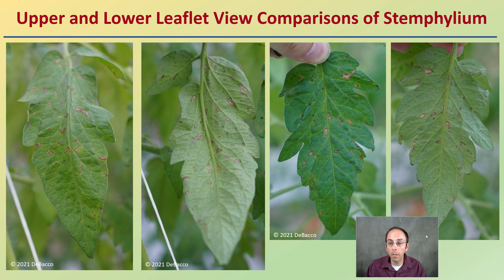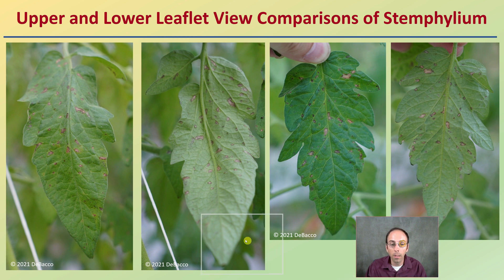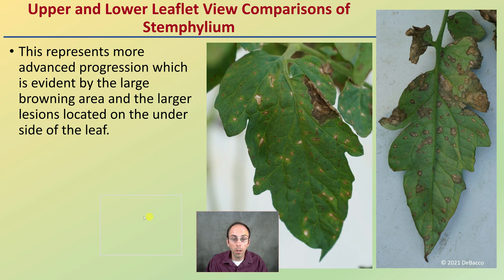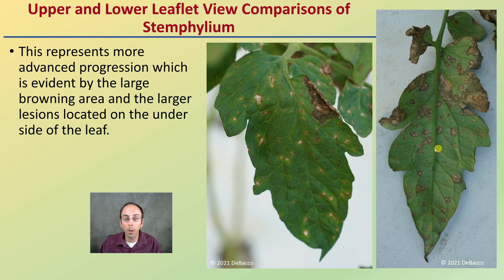Here's a zoomed-in view of what the different leaves look like — the upper portion and then the underside of that same leaf. You're not seeing a lot of yellow haloing here; instead, you're seeing brown coloration with tan centers. That tan coloration in the center with a darker brown region can be an indication of Stemophilium. Here's another look showing more advanced symptoms on both upper and lower leaf surfaces. The advanced progression is evident by this large browning area and larger lesions on the underside of the leaf — these are later stages compared to the earlier symptoms shown before.